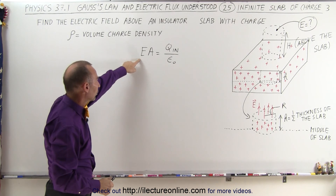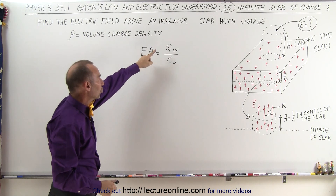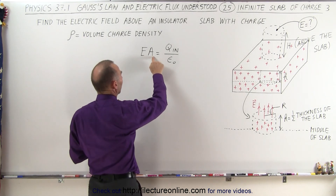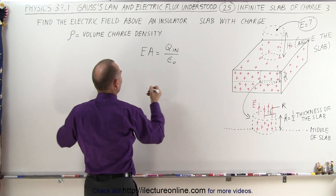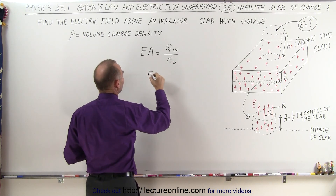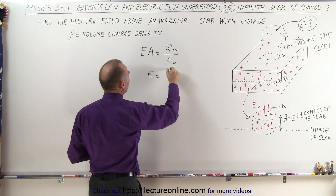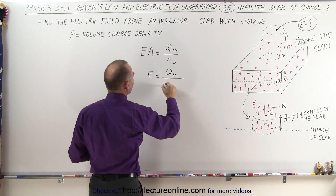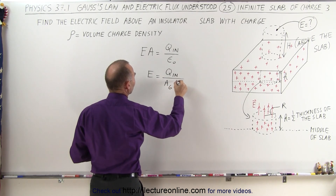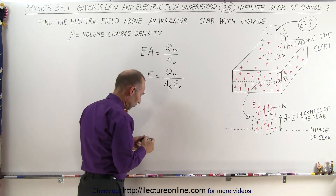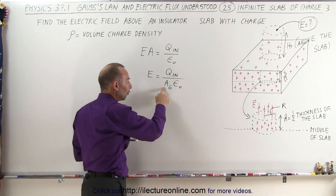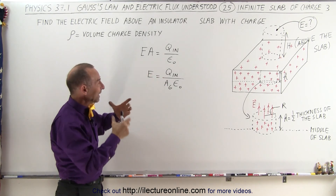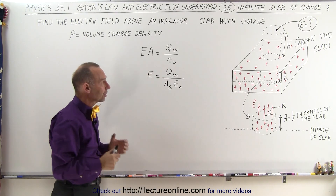We start with Gauss's law: E times A equals Q inside divided by epsilon sub-naught. We're going to have to figure out the area of the Gaussian surface. The electric field equals Q inside the Gaussian surface divided by the area of the Gaussian surface times epsilon sub-naught. We need to determine the surface area and the charge inside the Gaussian surface.